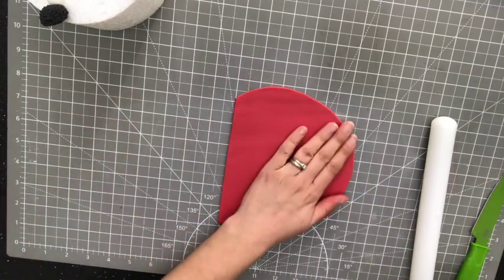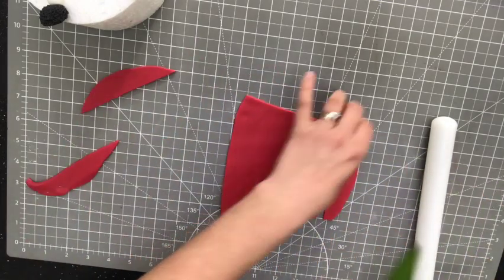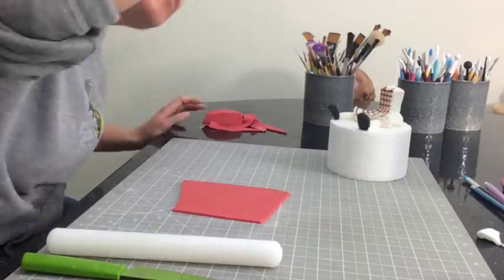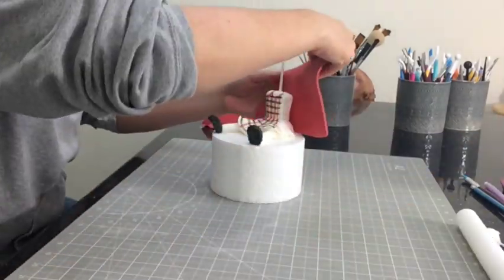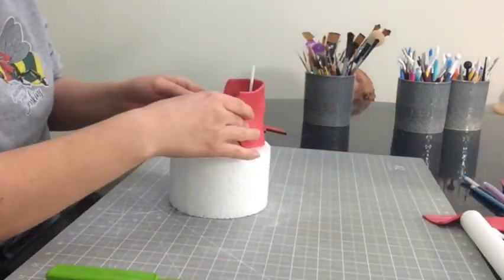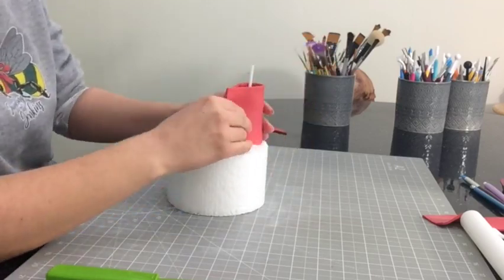Onto her coat I roll out some red fondant and I'm going to wrap it around her. Just sticking it in place with water and then I can make a clean cut to make the shape of her coat.